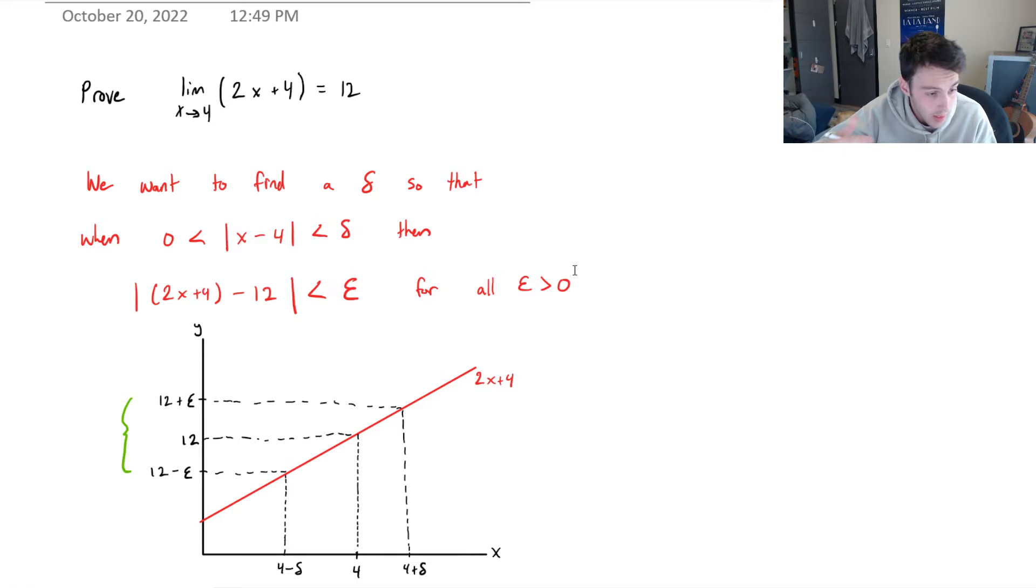So essentially what the question is saying is it wants you to prove that if I were to give you this kind of range of what the function can be, 12 plus epsilon, 12 minus epsilon, I need to tell you how small I can make delta so that when I evaluate the function at that point, it will give you an output that is within 12 plus epsilon and 12 minus epsilon.